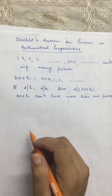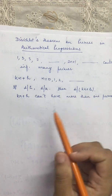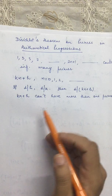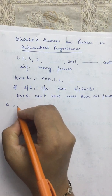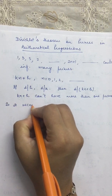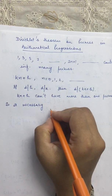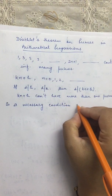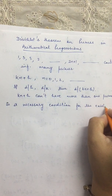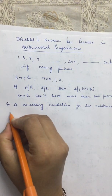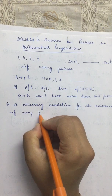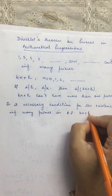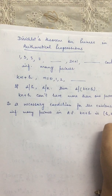That means the necessary condition for the existence of infinitely many primes in the arithmetic progression kn+h is that gcd(h, k) should be 1.